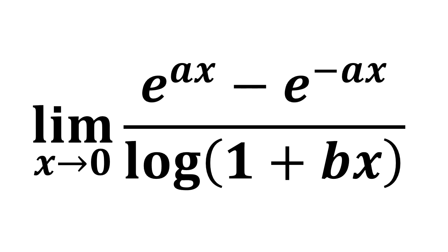In this video, we learn to find the limit of exponential of a times x minus exponential of minus a times x, upon natural log of 1 plus b times x, as x approaches 0.